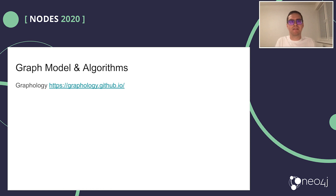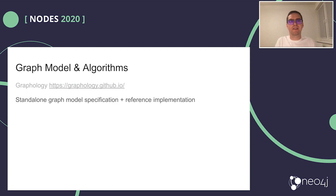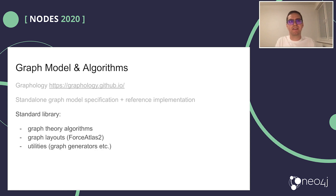I haven't talked yet about the graph model. I used the Graphology library because I believe that model storage and all algorithms, including layouts, can be shared across multiple libraries. Graphology is a standalone graph model specification and reference implementation, meaning that for very specific cases, one can write their own implementation and it will work with all other Graphology libraries. The standard library includes graph theory algorithms, graph layouts, and various utilities such as graph generators. I believe Graphology could become an ecosystem to share new graph algorithms and layouts in JavaScript, so developers are not locked into a particular library.